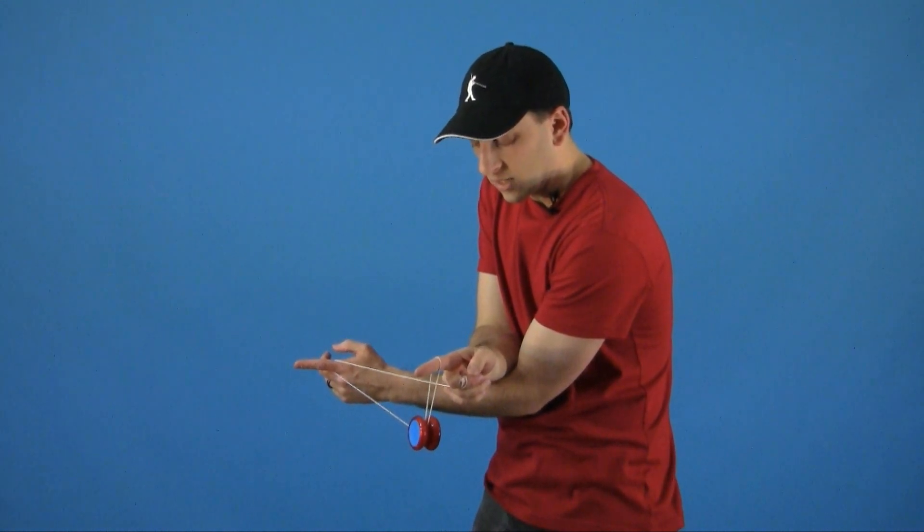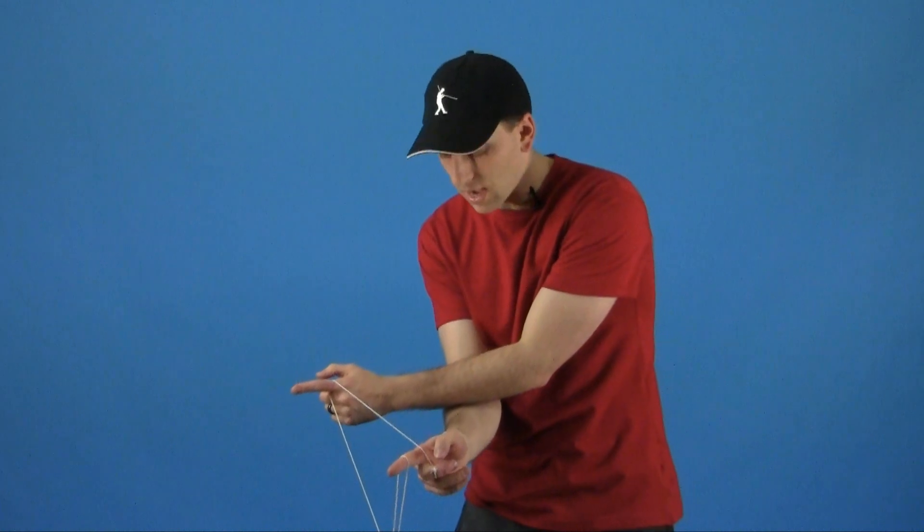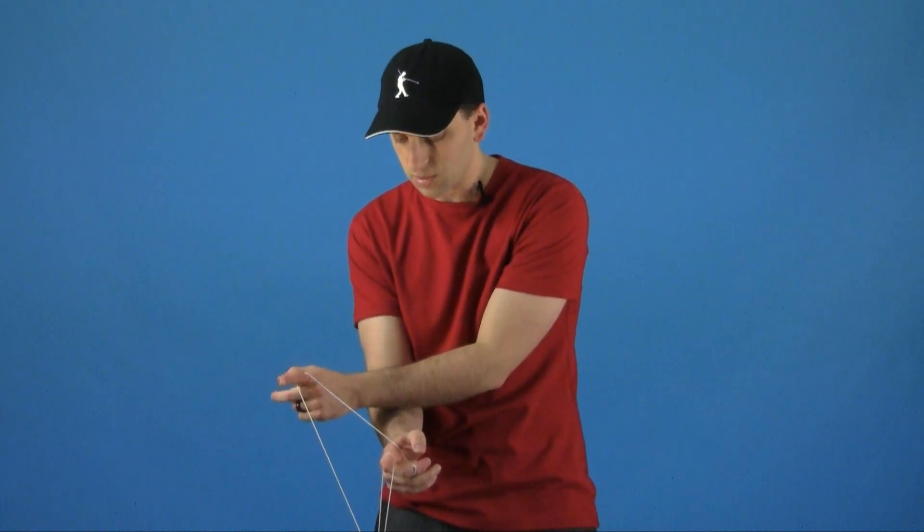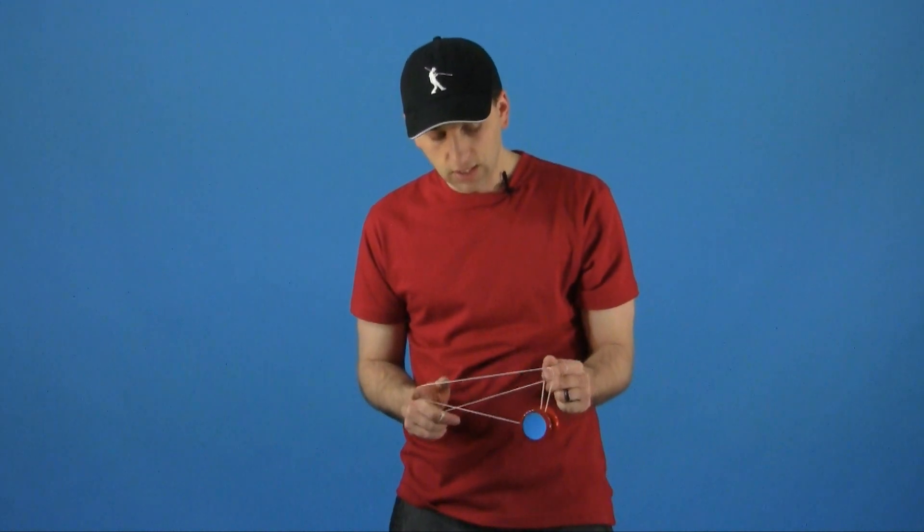To get into your double, you are going to uncross your hands and then cross them the opposite way. This sets you up for your double. All you are going to do is throw the yoyo up, uncross your hands, and make sure to catch the yoyo on the outside string because that will set you up for your dismount, which you have already learned from Double or Nothing.